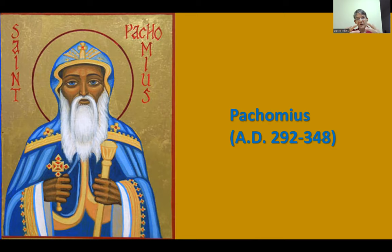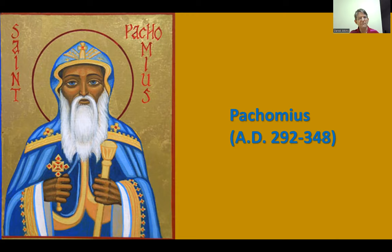As time went by, individual monks began to come together to live in monastic communities. Pachomius is believed to be the father of the cenobitic monastic life — the father of monastic communities. He is believed to have established the first monastic community sometime between AD 318 and 323, located somewhere in the Egyptian desert. Eventually, his monastery would have more than 100 monks.